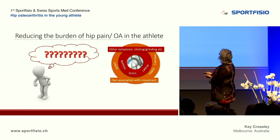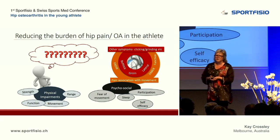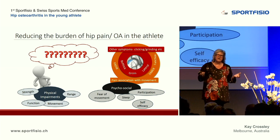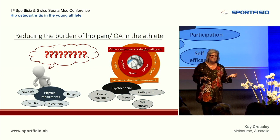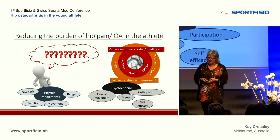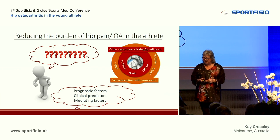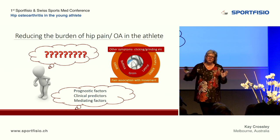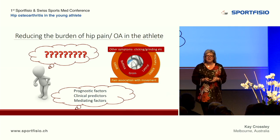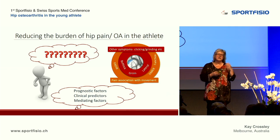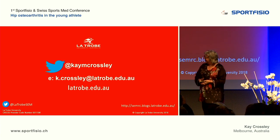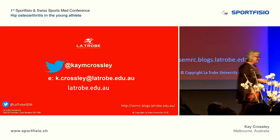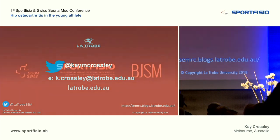In conclusion, hip muscle weakness is a feature of hip OA, and movement patterns associated with lower loads may be a factor in people with hip pain. Going back to reducing the burden of hip pain, we need to consider the patient perspective — structure may or may not be related to symptoms — and address both psychosocial and physical impairments for a comprehensive treatment package. We clearly need much more work looking at prognostic factors, clinical predictors, and mediating factors in the long-term relationship between hip-related pain and developing hip OA.